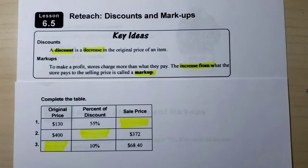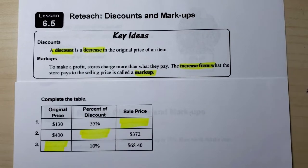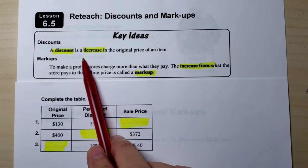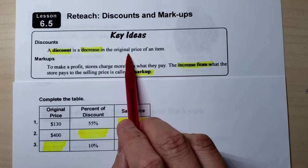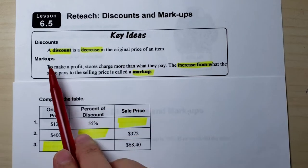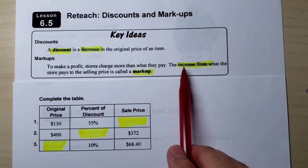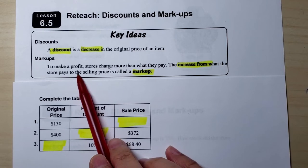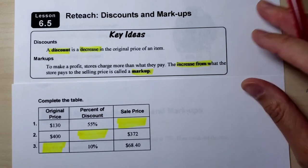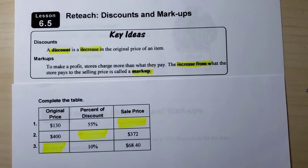For this week, we will be reviewing discounts and markups. A discount is the money you save — it's the decrease in the original price. A markup is an increase of the price, to earn a profit. If you're a business person, you're going to mark items up so you can earn money.